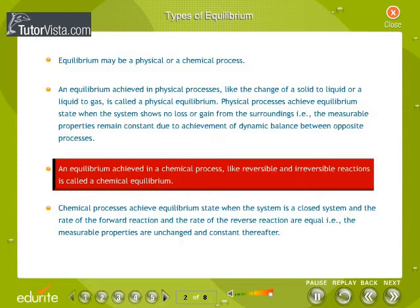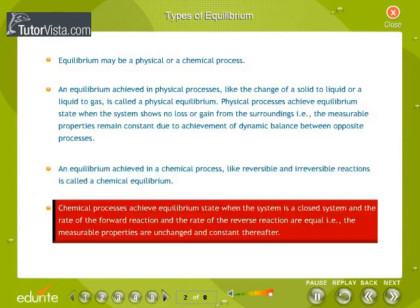An equilibrium achieved in a chemical process, like reversible and irreversible reactions, is called a chemical equilibrium. Chemical processes achieve equilibrium state when the system is a closed system and the rate of the forward reaction and the rate of the reverse reaction are equal, i.e., the measurable properties are unchanged and constant thereafter.